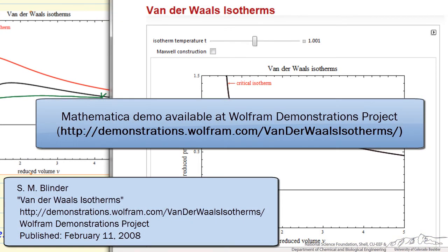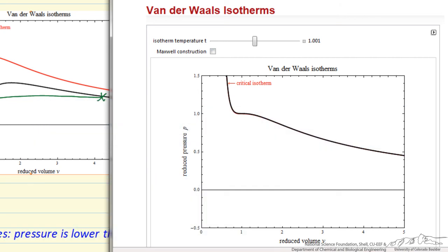This interactive van der Waals calculation is available online, and was calculated using Mathematica. So what I'm showing here in this plot is the critical isotherm, where the reduced temperature is 1.